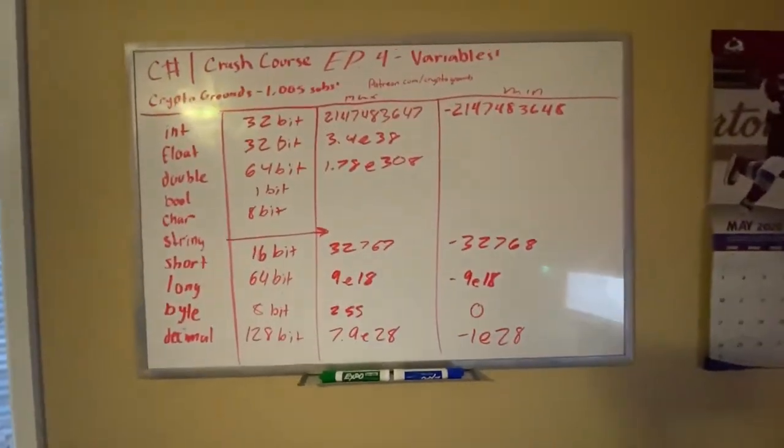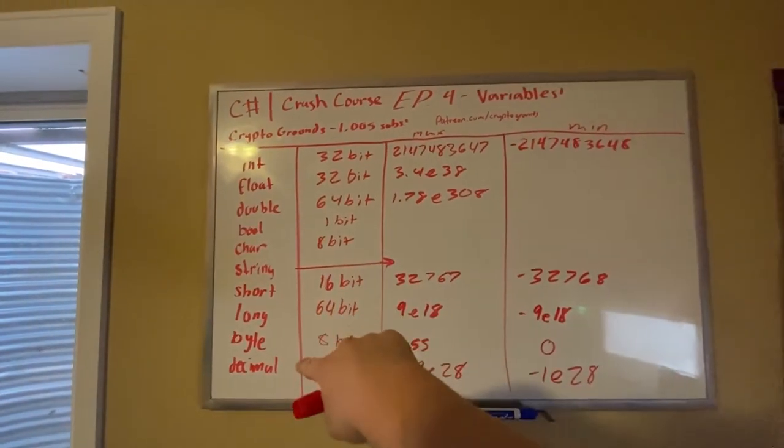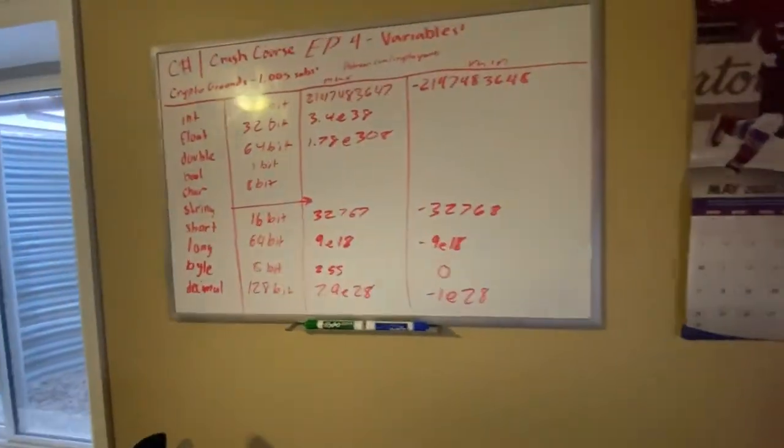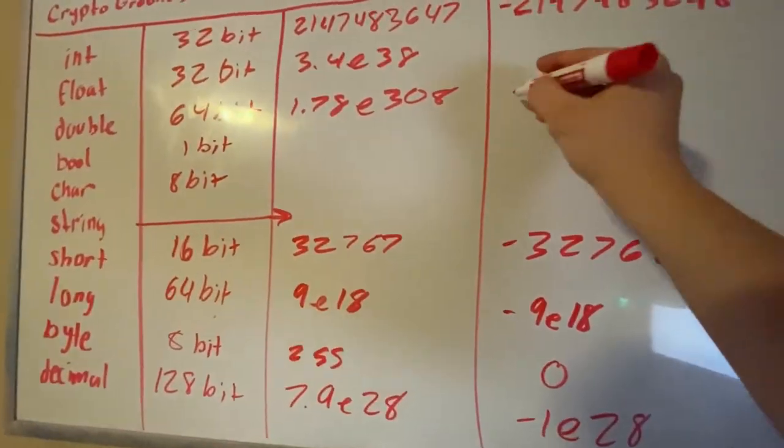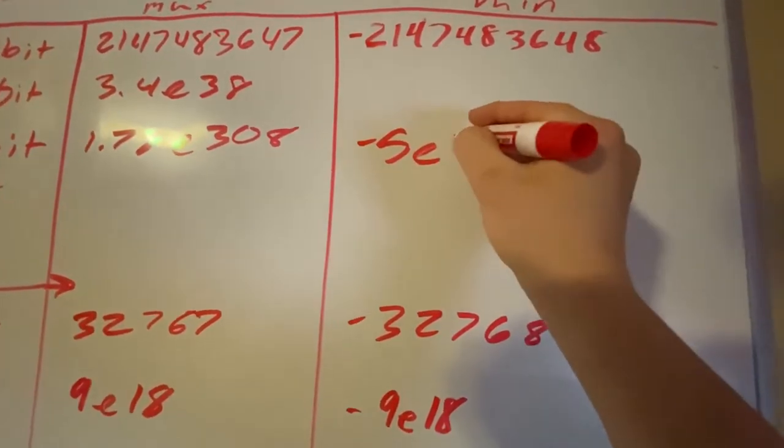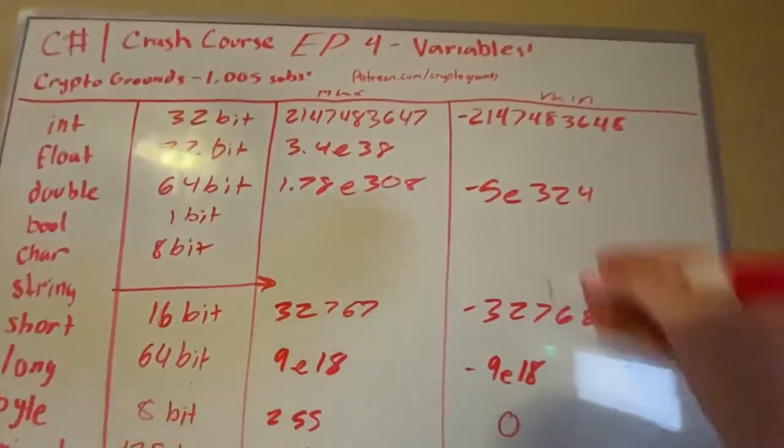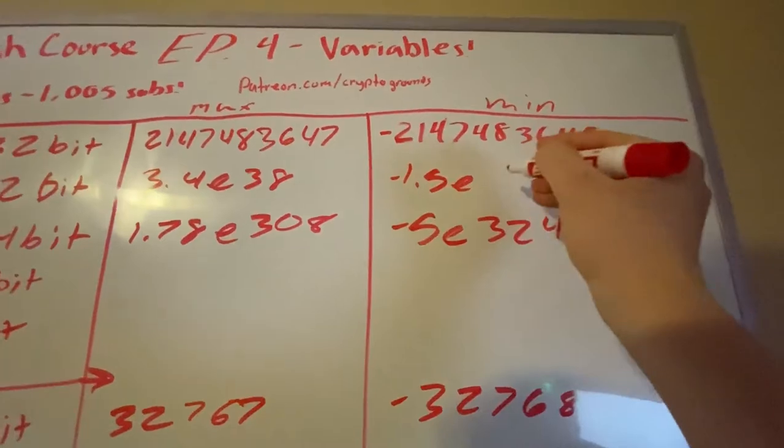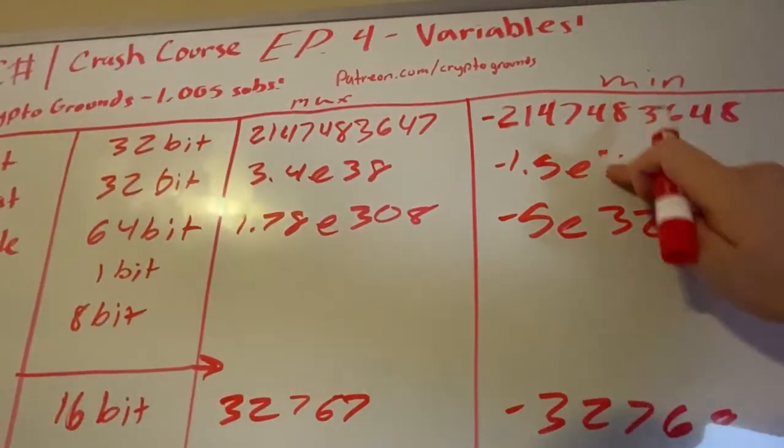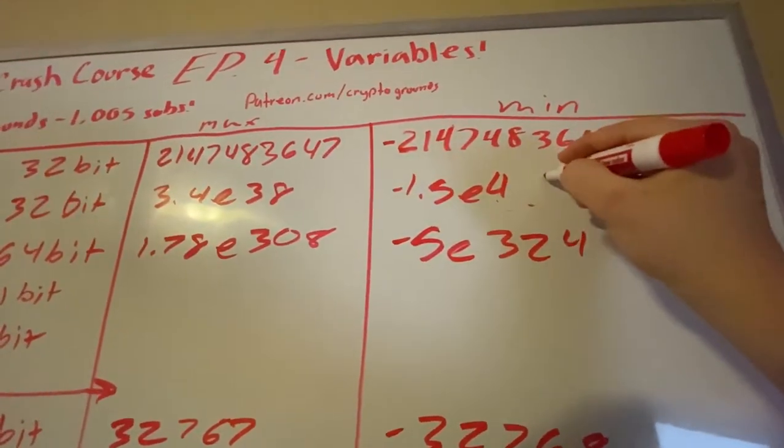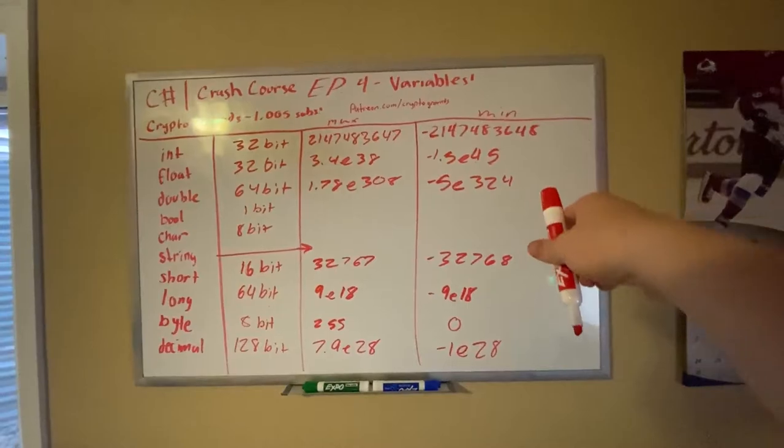I think that is all I need to reveal. We can do precision for these ones, for float, double, and decimal. I haven't done float and double yet, okay. So the minimum for double is negative 5e324. Now for float, it's negative 1.5e45.